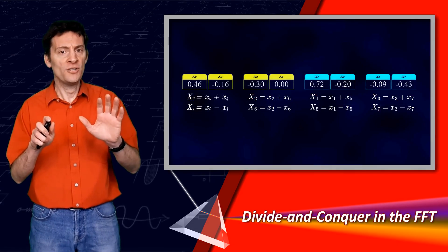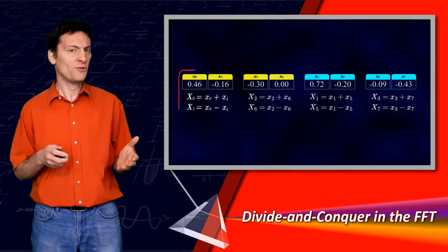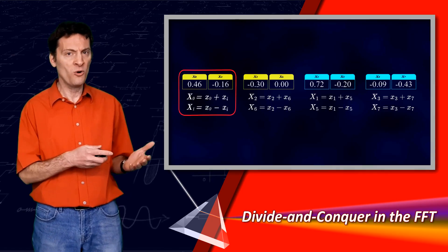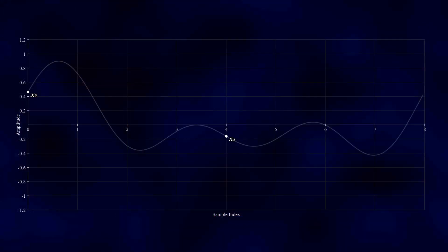But hang on, you might be saying, this cannot be right. Running a two-point DFT on the first group of samples, x0 and x4, that has some logic to it because look at where they sit in the signal. They are properly aligned with the maxima and minima of the cosine wave at all frequencies.